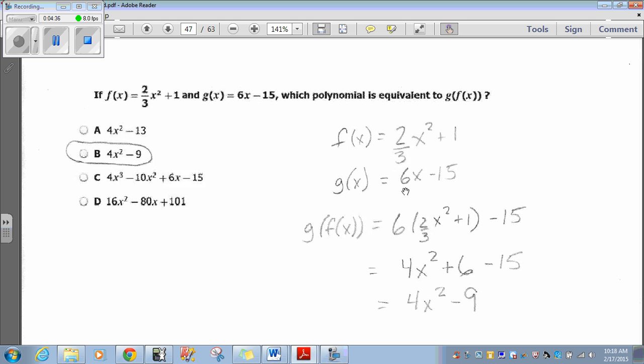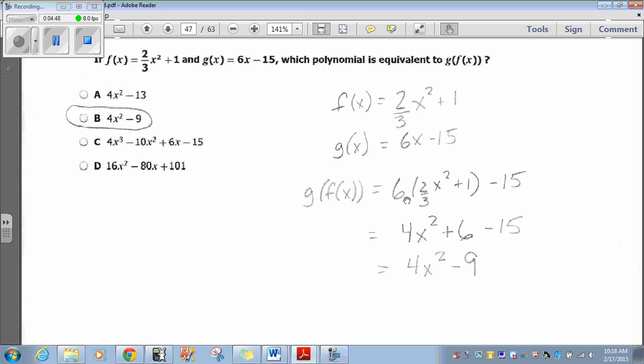So that means 6, and wherever we see an x, we're going to plug this in, 2 thirds x squared plus 1 minus 15. Now we distribute. 6 times 2 thirds is 12 thirds, which is 4. So that's 4x squared. 6 times 1 is 6. So we get 4x squared plus 6 minus 15. So positive 6 minus 15 is negative 9. 4x squared minus 9.